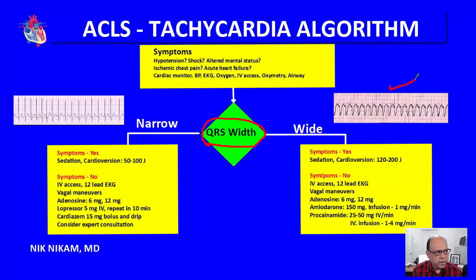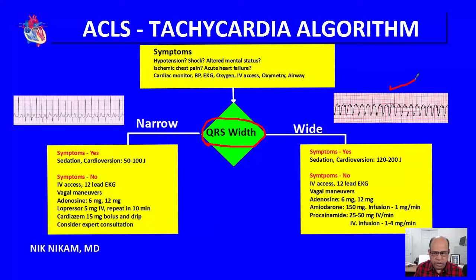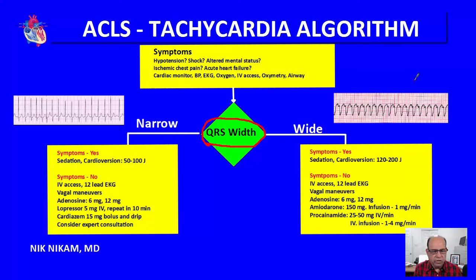When you see a wide QRS tachycardia, it could be ventricular in origin, or it could be supraventricular in origin with ventricular aberration or bundle branch block. A 12-lead ECG will help you understand the rhythm better. If the patient has an underlying left bundle branch block, the supraventricular tachycardia may also present with a wide QRS complex.